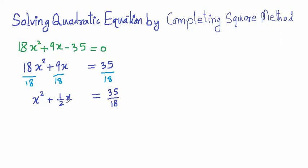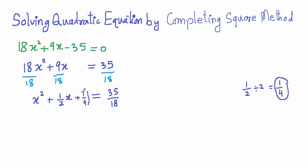The coefficient of x is 1/2. We divide this coefficient by 2 to get 1/4. Then we add the square of 1/4 — which is 1/16 — to both sides of the equation.